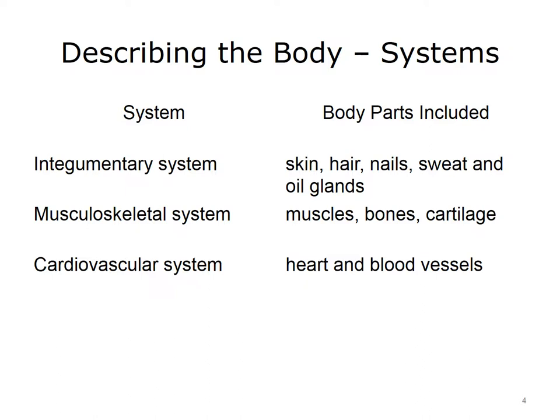Cells form into tissues, tissues form into organs, and organs form into systems. A system is composed of several organs functioning together in a coordinated manner.